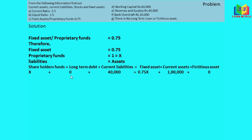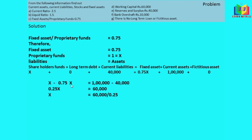Long-term loan is zero and fictitious asset is zero. Using the balance sheet equation: proprietary fund equals fixed asset plus current assets minus current liabilities. So x minus 0.75x equals 60,000, meaning 0.25x equals 60,000, therefore x equals 2,40,000. That is the proprietary fund.